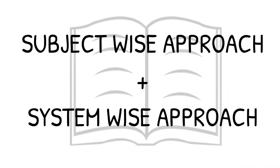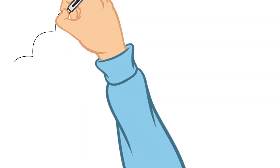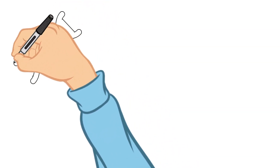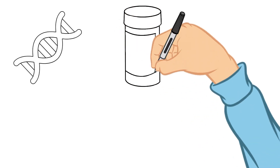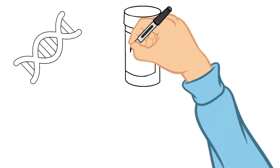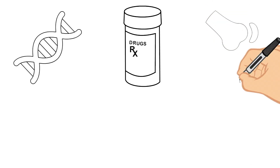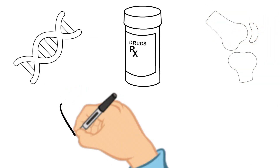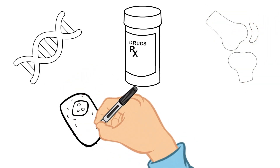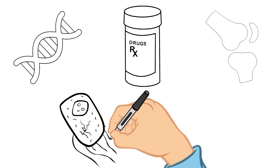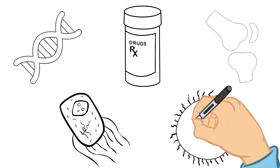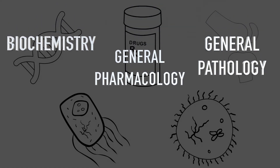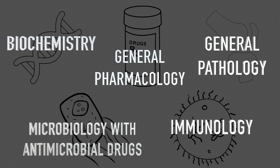But being a preclinical student, you don't have adequate knowledge to study a system wise approach right away. The idea is to make a plan which includes both a subject wise and system wise approach. First you study the very basic subjects: biochemistry, general pharmacology — which covers pharmacokinetics and pharmacodynamics — general pathology — which covers inflammation and general terms of pathology and pathophysiology — then microbiology with antimicrobial drugs, and finally immunology. After this you will have a solid basic knowledge you need to understand the system wise approach.